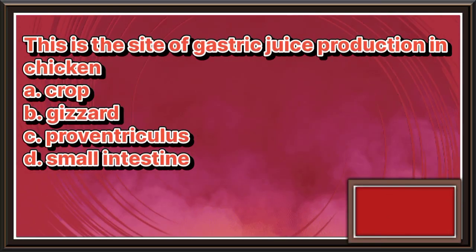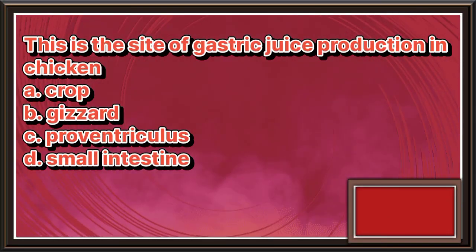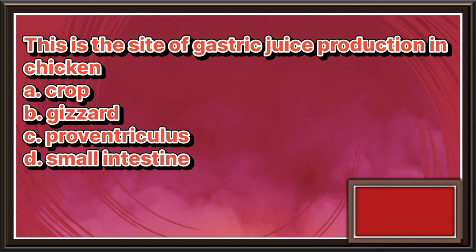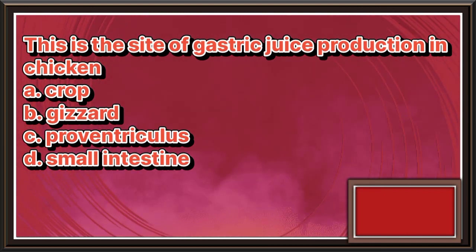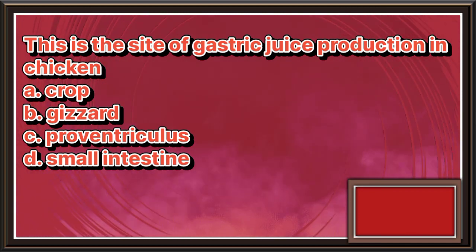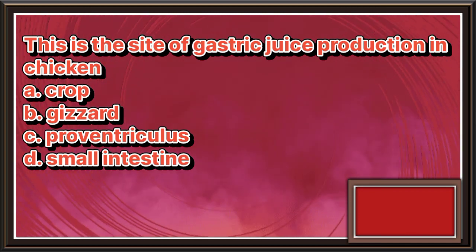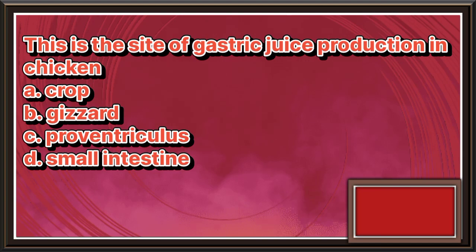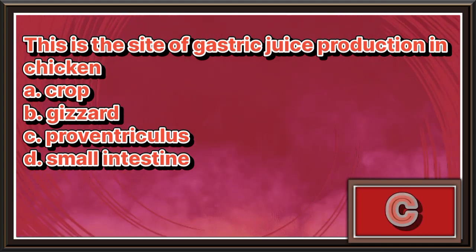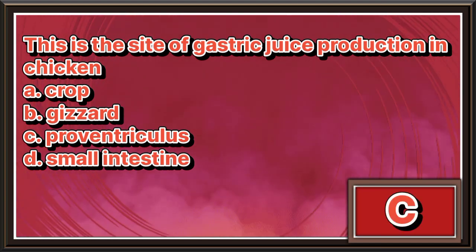This is the site of gastric juice production in chicken. a. Crop. b. Gizzard. c. Proventriculus. d. Small intestine. The answer is letter c.